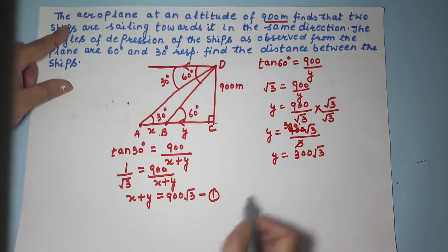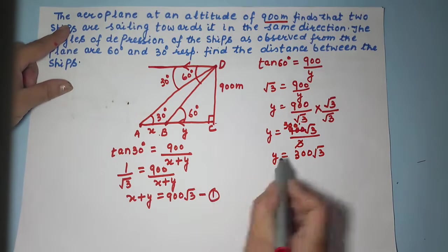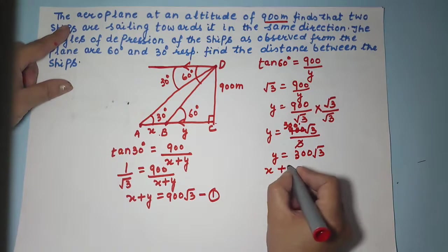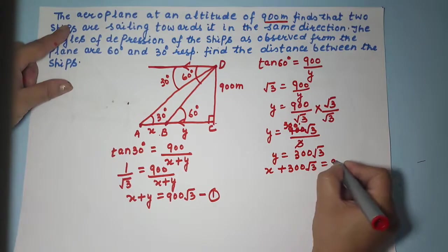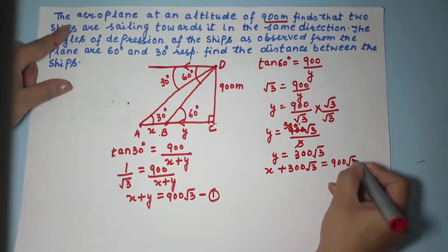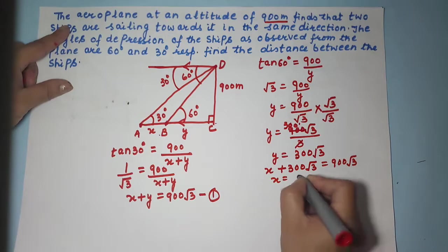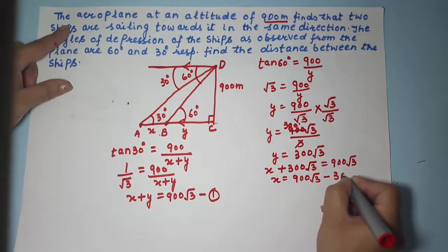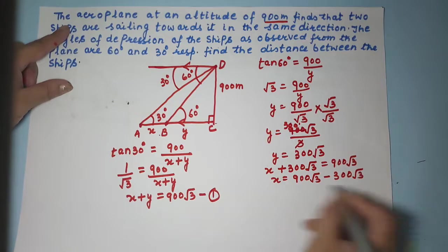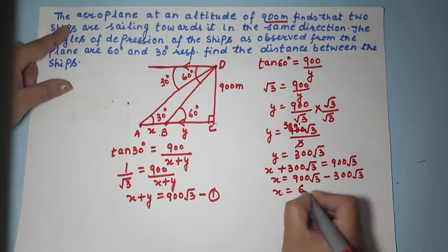Now you will go back to this equation and replace the value of Y as 300 root 3. So you are getting X plus 300 root 3 is equal to 900 root 3. So your X is equal to 900 root 3 minus 300 root 3. How much is that? 600 root 3.